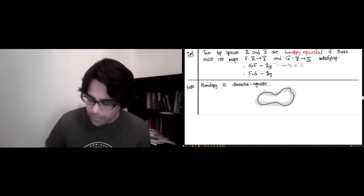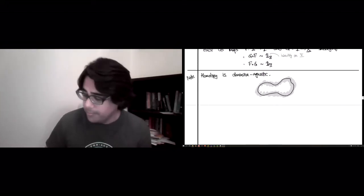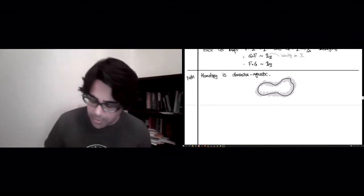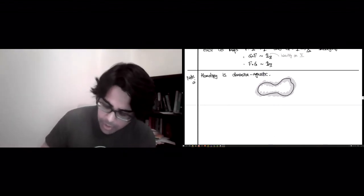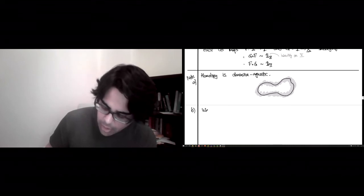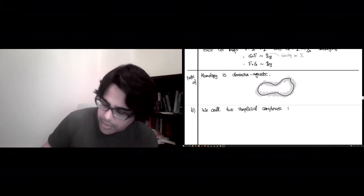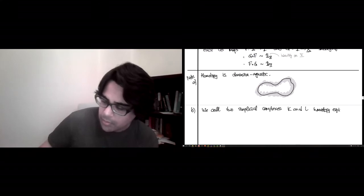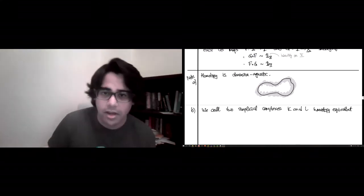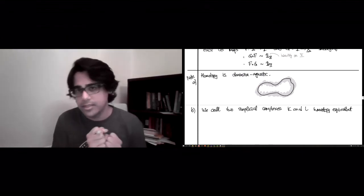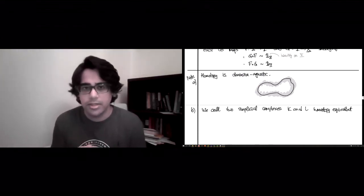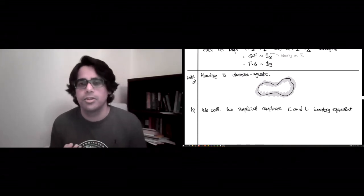Now, there are a few sorts of procedural things to keep in mind. So this was part A of the note. Part B is, we call two simplicial complexes, let's say K and L, homotopy equivalent. I mean, this is the obvious thing, right? We have a way to take a simplicial complex and look at it as a topological space, which is geometric realization. So when we say two simplicial complexes are homotopy equivalent, what we really mean is that their geometric realizations are homotopy equivalent in the sense of the definition above.